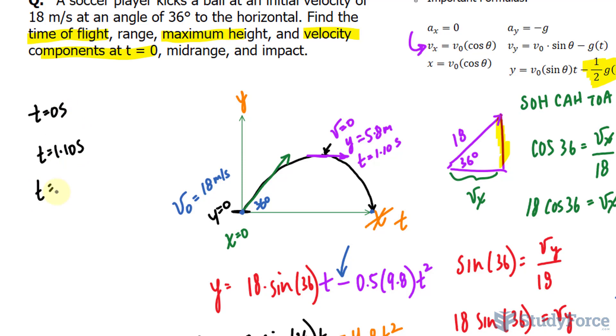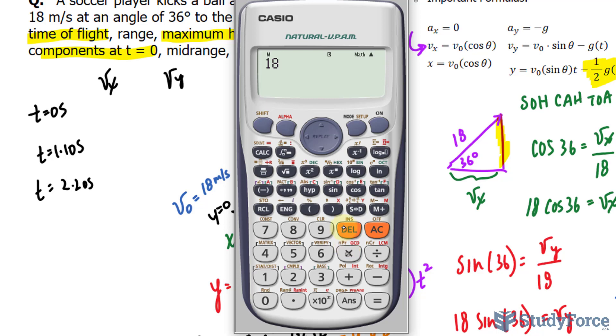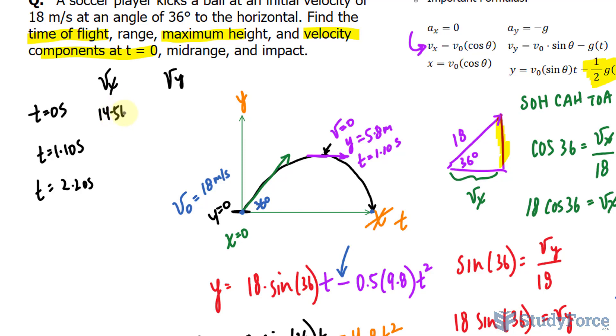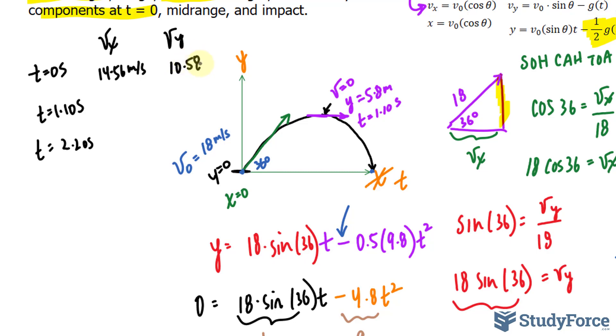and when t is at 2.20 seconds. So the x component for the velocity and the y component will be filled in. The x component, using this formula right here, for when t = 0, we can write 18 times cos(36), that's 14.56 meters per second. The y component is using sine, so 18 times sin(36), the y component is 10.58 meters per second. At 1.10, the x component is still 14.56...